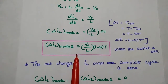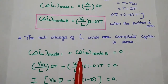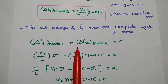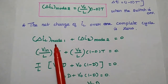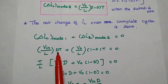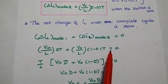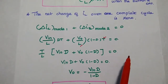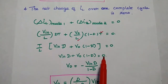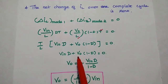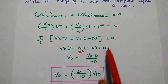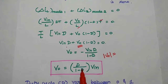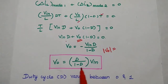Finally, the net change in inductor current over one complete cycle is equal to zero. So the sum of Mode 1 and Mode 2 inductor current changes equals zero: (V_in / L) × D × T + (V_O / L) × (1 − D) × T = 0. Taking T/L as common and simplifying: V_in × D + V_O × (1 − D) = 0. Solving for V_O gives: V_O = −D / (1 − D) × V_in. Considering only the magnitude: V_O = [D / (1 − D)] × V_in.